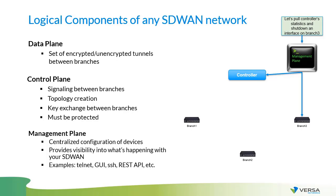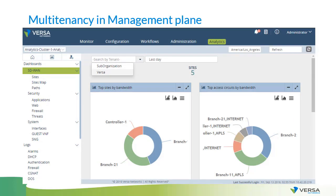Now that we've reviewed the definition of multi-tenancy and the main components of any SD-WAN network, let's see where multi-tenancy can be applied. The first example is multi-tenancy in the management plane. On this screen you can see the graphical user interface of Versa Orchestrator — the interface that allows you to see statistics of any branch, top talkers, and parameters of branches or controllers. Currently we're logged in as the administrator user, who has access to see information about the tenant called 'Versa' and the tenant called 'suborganization.' The administrator can see all tenants and all devices in every tenant.